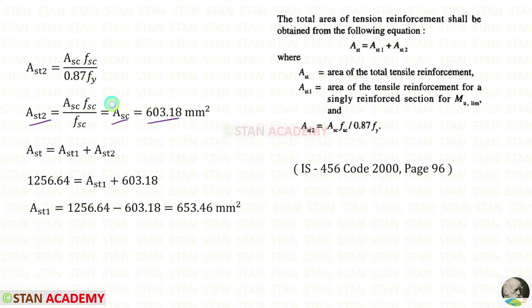Initially we have calculated ASC. We can apply that. We can write this expression. In the beginning we have calculated AST. AST2 just before we have calculated. So AST1 will be 653.46 millimeter square.